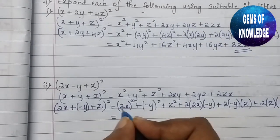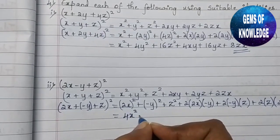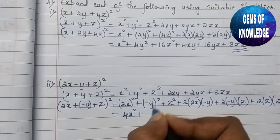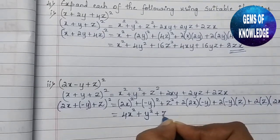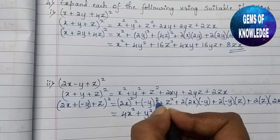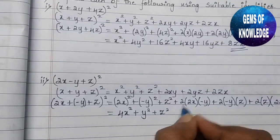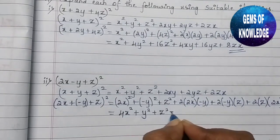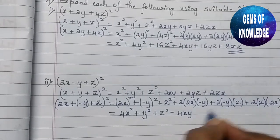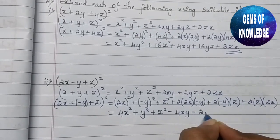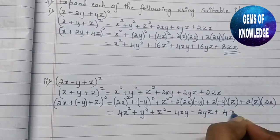Opening this: (2x)² = 4x². Since (−y)² = +y², and z². Then 2·2x·(−y) = −4xy, and 2·(−y)·z = −2yz, and 2·z·2x = +4zx. So the result is 4x² + y² + z² − 4xy − 2yz + 4zx.